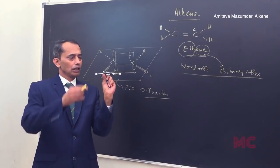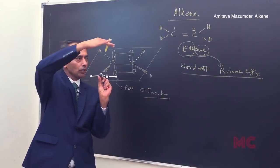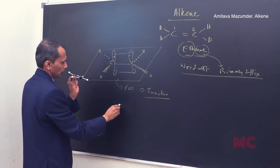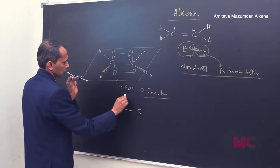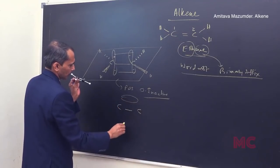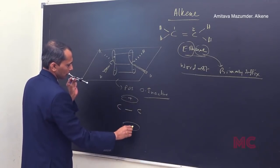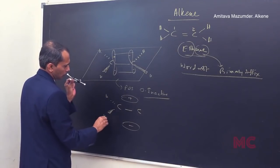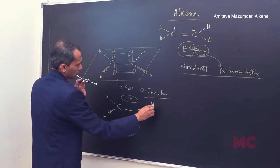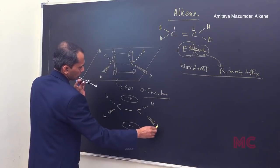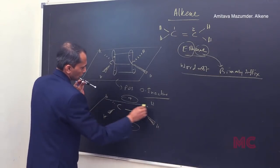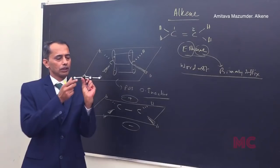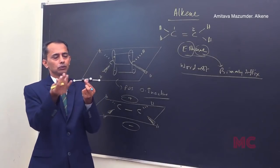If you look at the valence bond theory diagram — and if you consider the MO diagram — it shows the pi electron cloud above and below the plane. There is a hydrogen here and a hydrogen there; this is the ethene molecule. The ethene molecule exists in the XY plane.